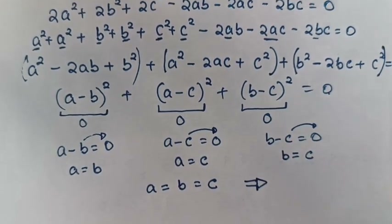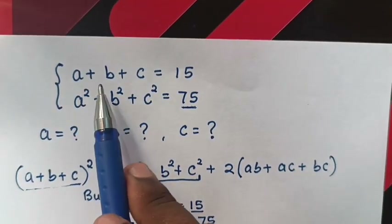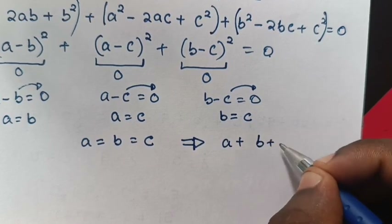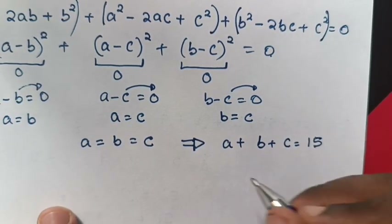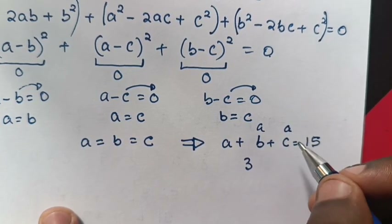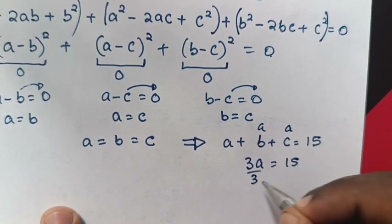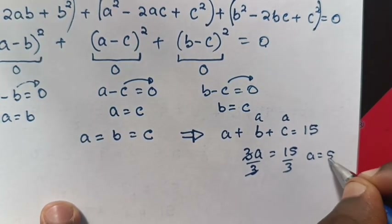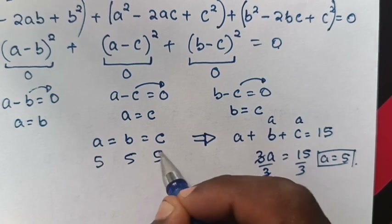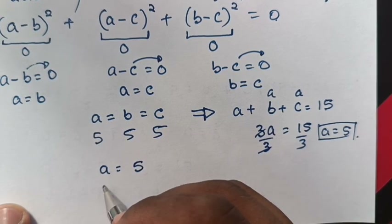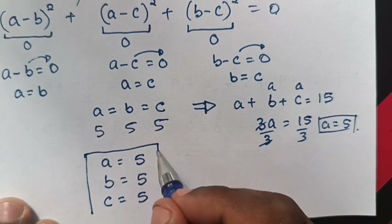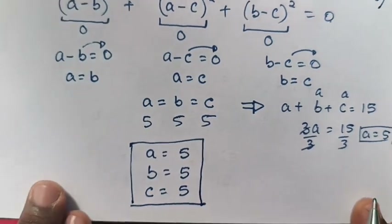Recalling our equation, a plus b plus c equals 15. Since a equals b equals c, we substitute to get 3a equals 15. Dividing both sides by 3, a equals 5. Therefore a equals 5, b equals 5, and c equals 5. Those are the answers for the value of a, b, and c in our problem. Don't forget to subscribe to my channel and see you in the next video.